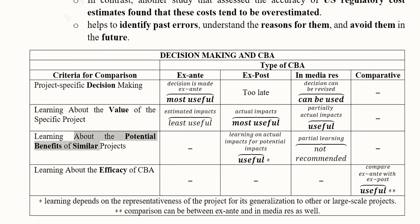The third criterion is learning about the potential benefits of similar projects. Ex-post analysis is again most suitable, as actual impacts help predict potential impacts for future similar projects. Partial learning is also possible through In Medias Res CBA. Ex-post is the most appropriate type when understanding potential benefits across projects in the same sector or sub-sector.